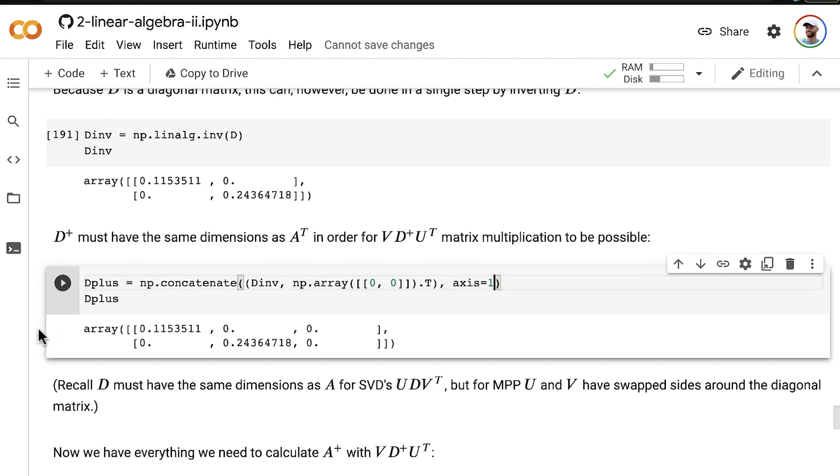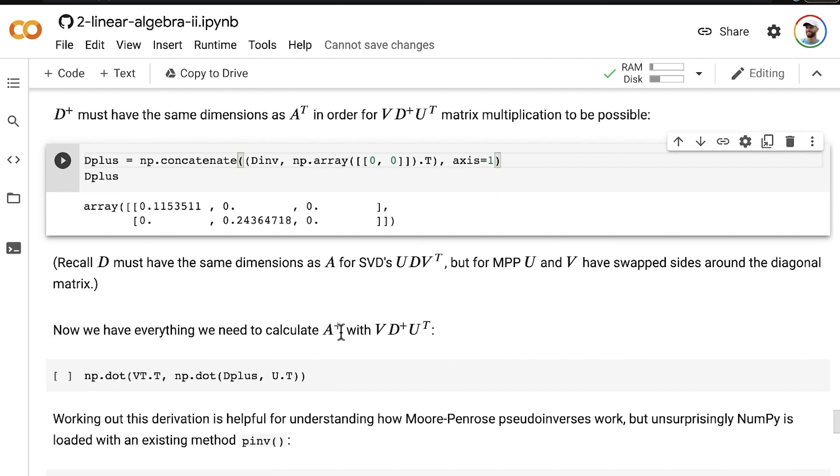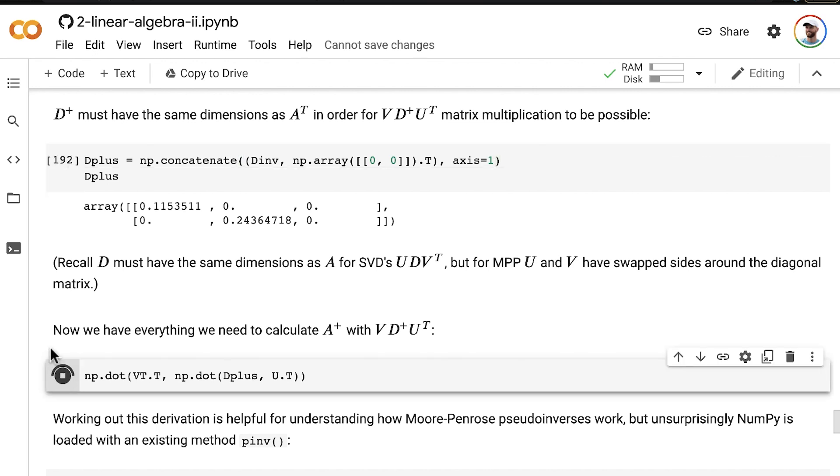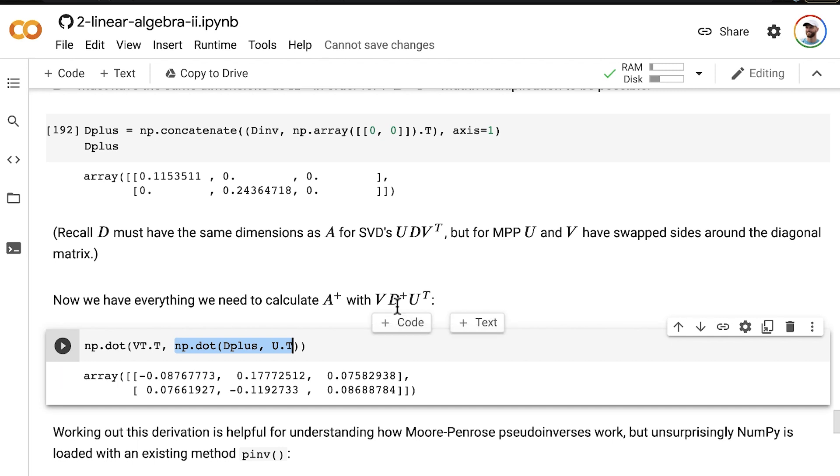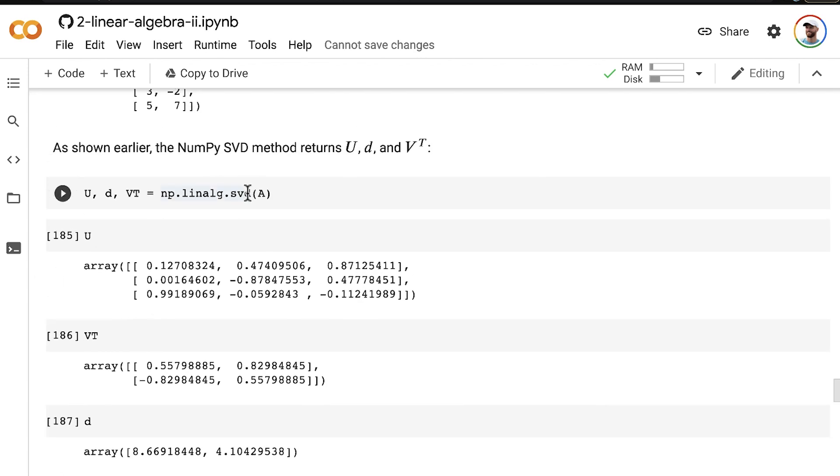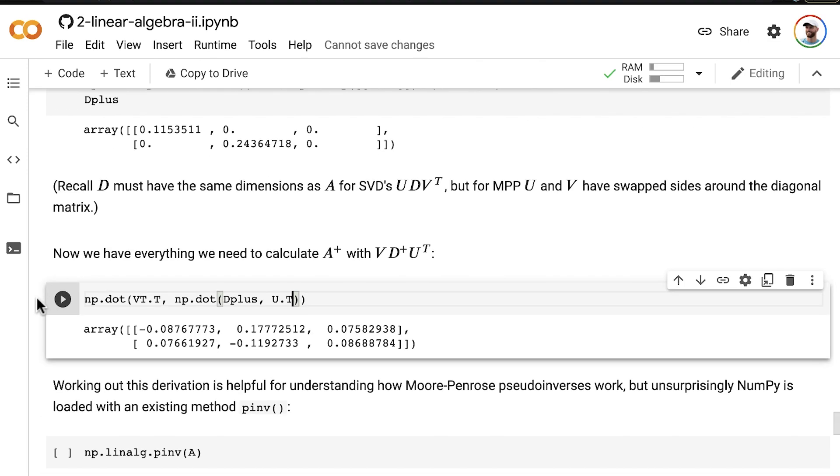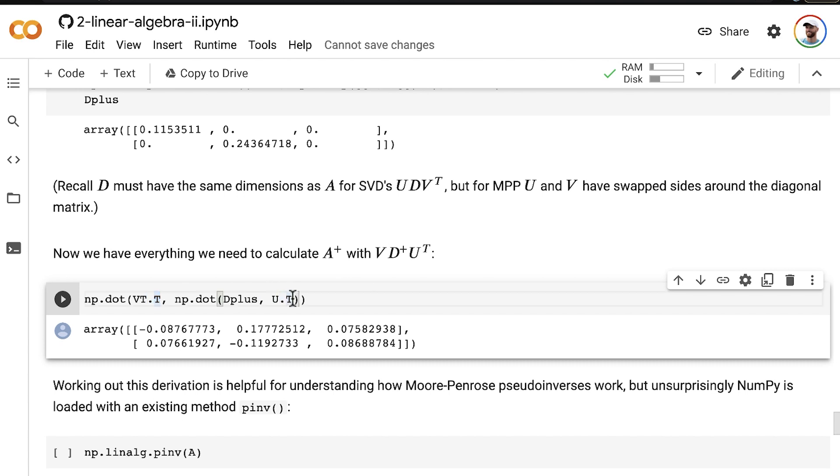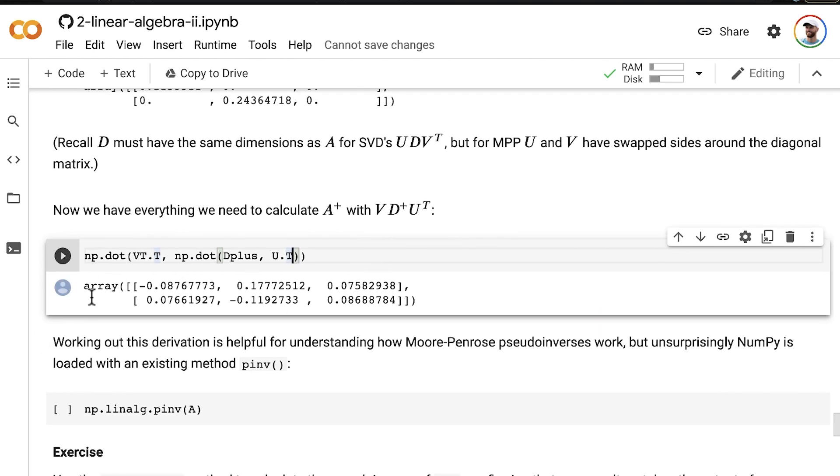Now, we have everything that we need to calculate A plus. We can do that right here. We've got this matrix multiplication, first of D plus and U transpose, and then we do matrix multiplication as well of V, which is V transpose transposed, also noting here that we have U transpose. Again, I already mentioned this earlier, but recall that by default, singular value decomposition in NumPy gives us U and V transpose, but we want U transpose and V. So, we get those by adding this dot T onto our matrices, easy as pi to transpose them. Then we're all set. This is it. This is the pseudo-inverse of our matrix A.